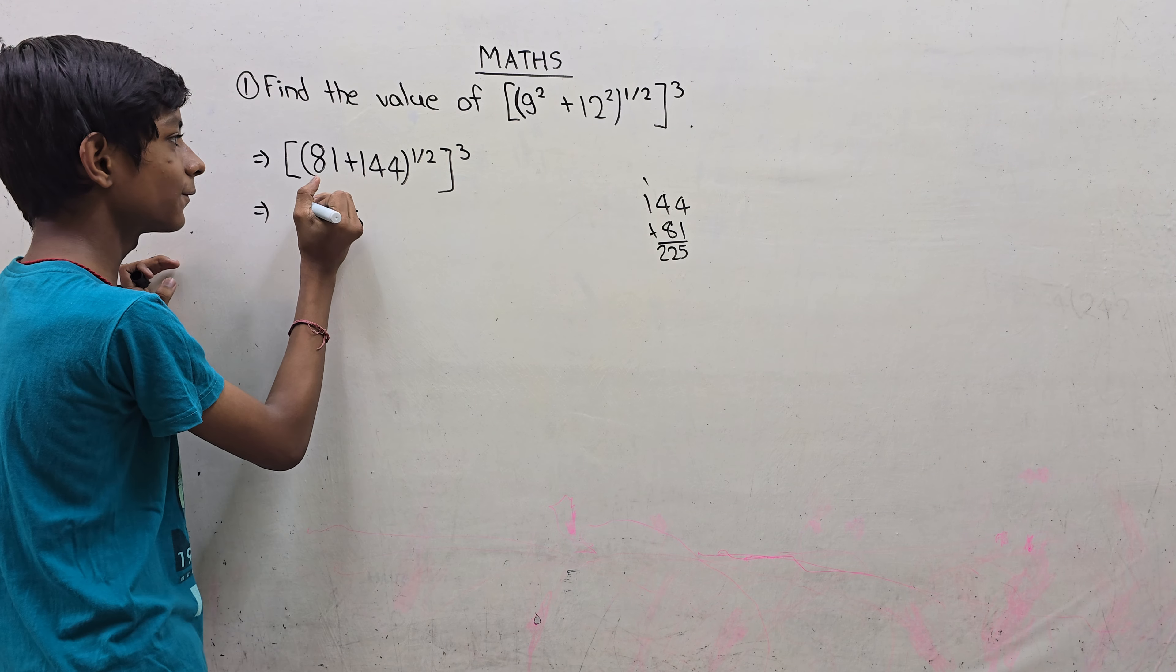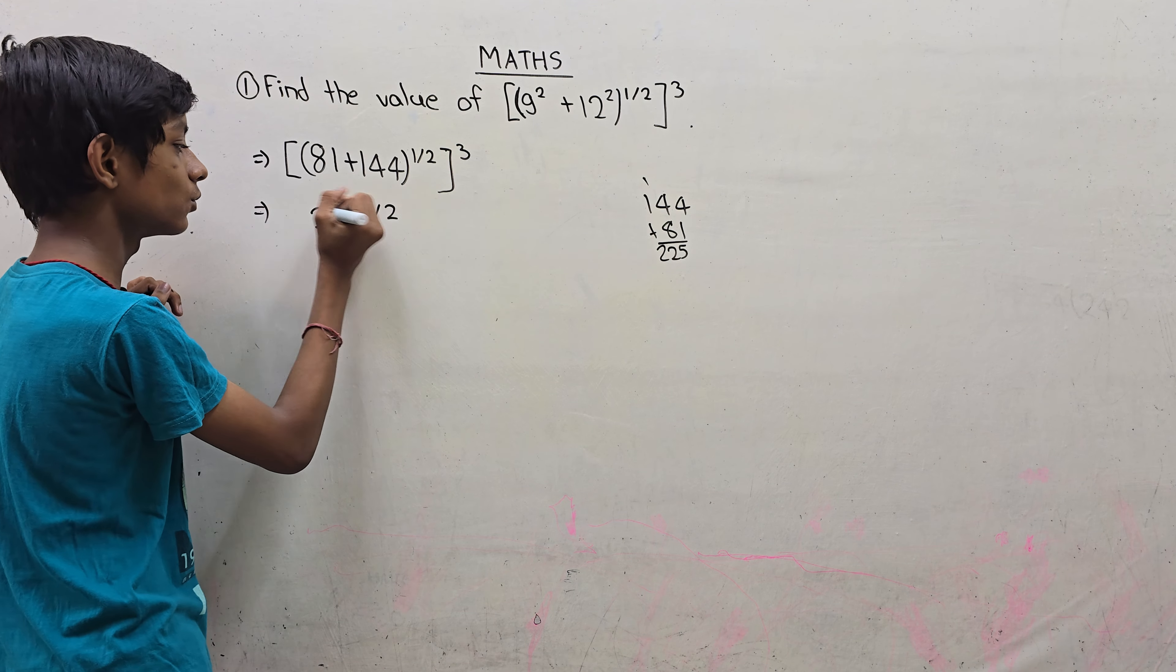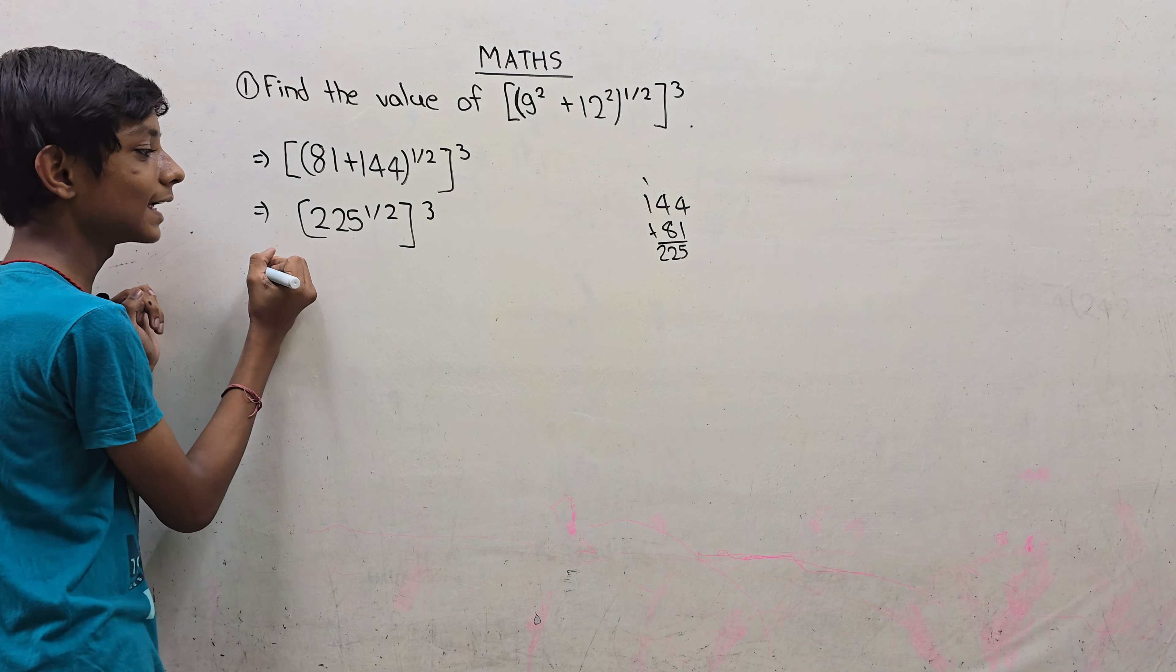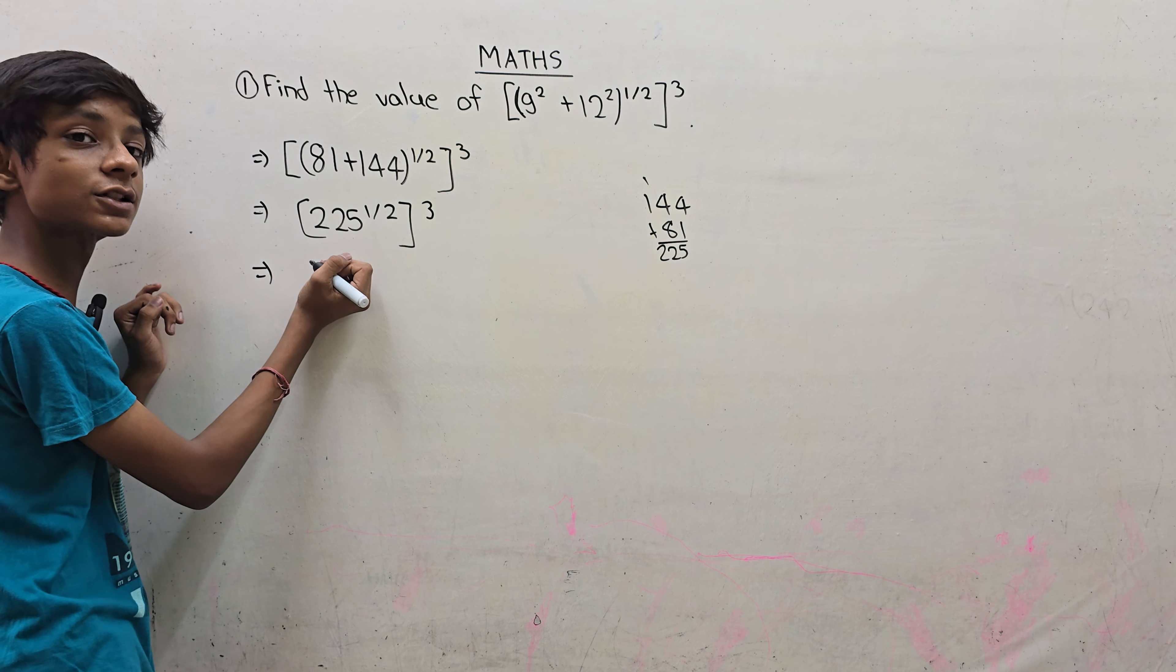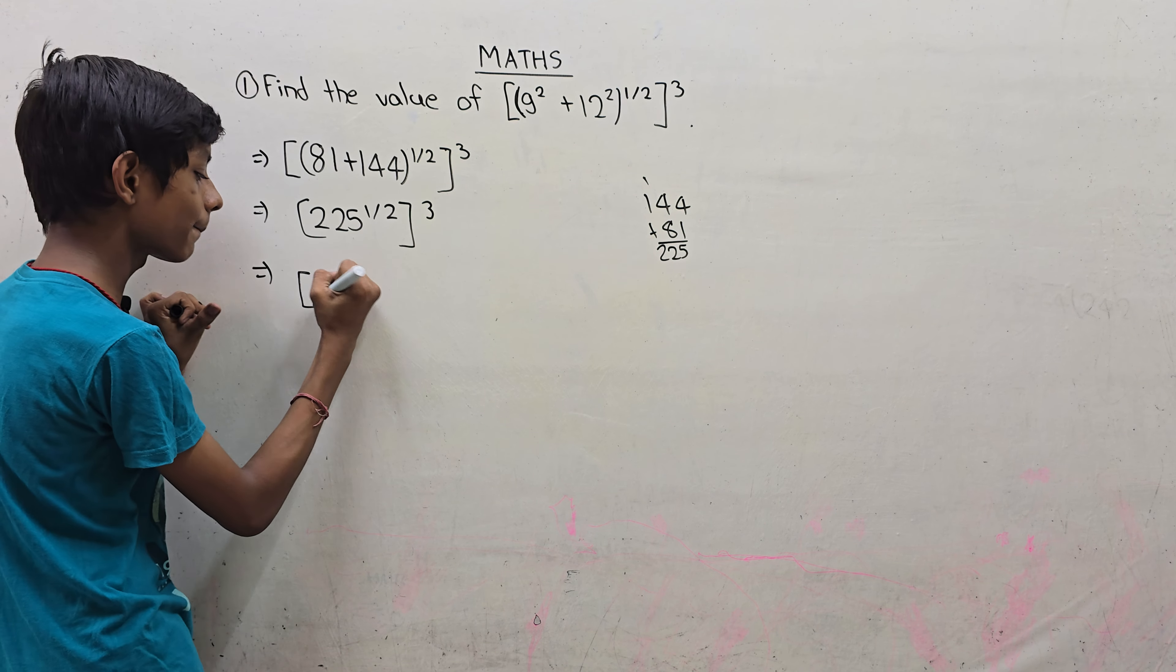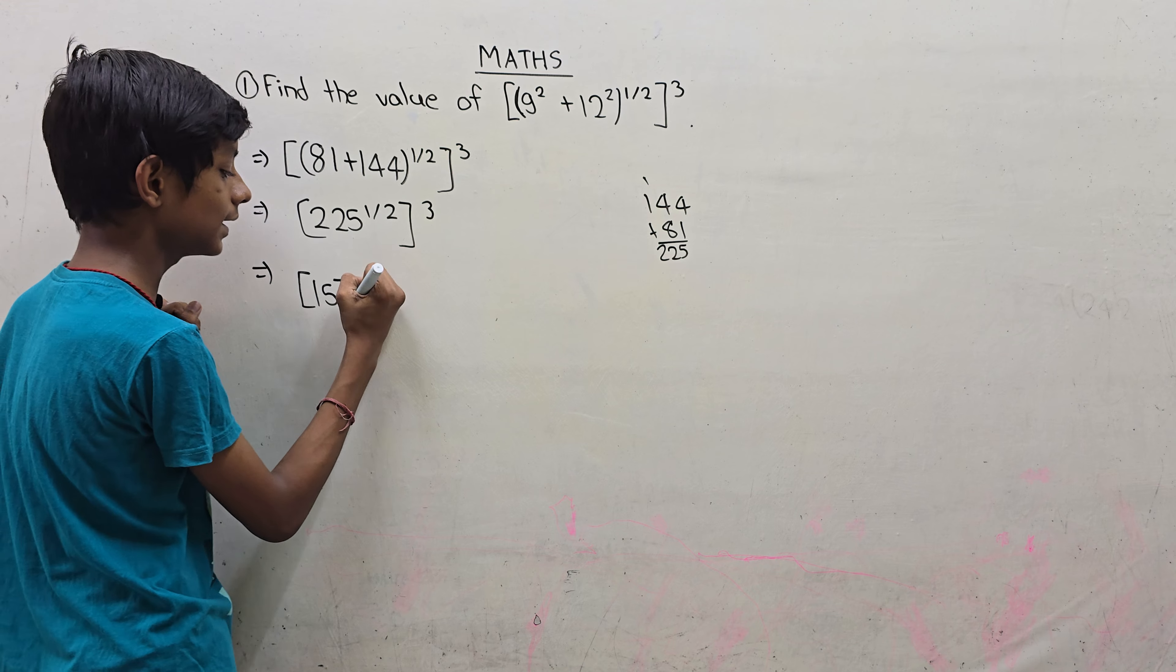Now we have raised to the power 1/2. I mean the value of this is 225 square root. This is 15 squared.